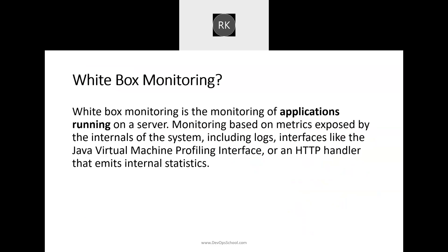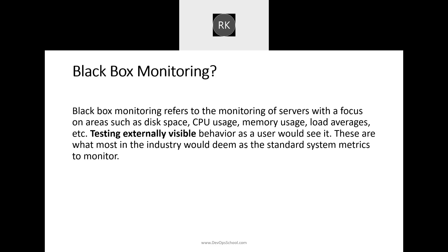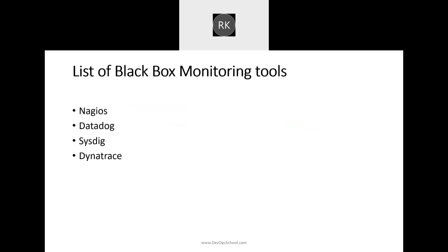There are types of monitoring: white box monitoring and black box monitoring. White box monitoring is the monitoring of applications running on a server - monitoring based on metrics exposed by the internals of the system. It can be logs, interfaces like a JVM port, profiling interfaces, or HTTP handlers that emit internal statistics and traces. Most people focus on black box monitoring, which refers to monitoring of servers with focus on areas such as CPU, disk, memory, load - externally available metrics.